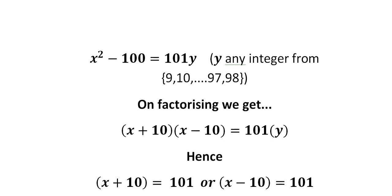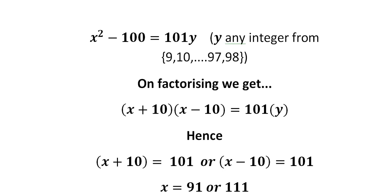These are our only two possibilities. X can only take two possible values: either 101 − 10 or 101 + 10, which means x = 91 or x = 111. Now remember the key fact we established earlier: x² must be less than 10,000, so x must be strictly less than 100. That means 111 is not a valid solution, since it exceeds 100. So we've only got one solution, and that is x = 91.